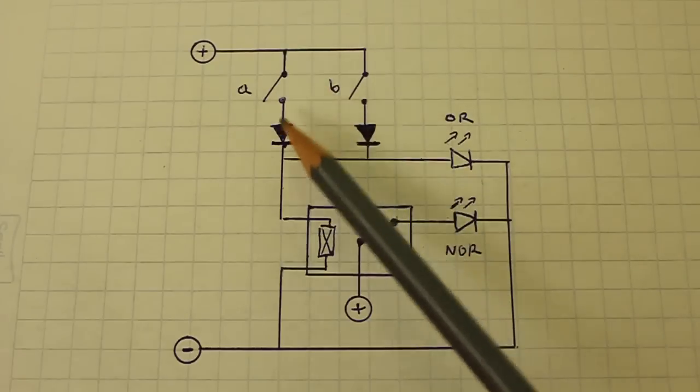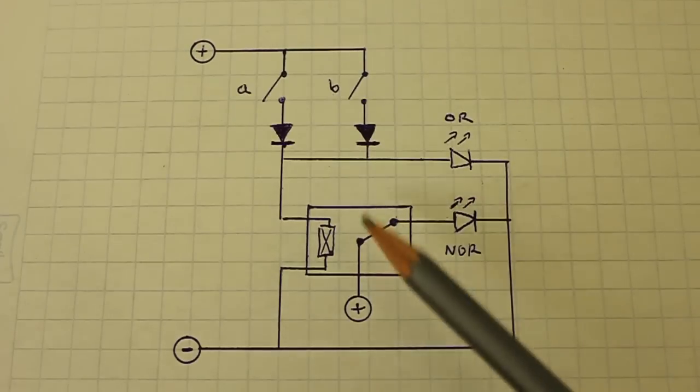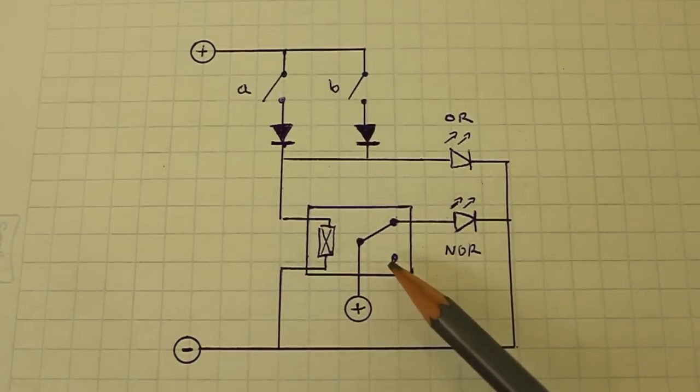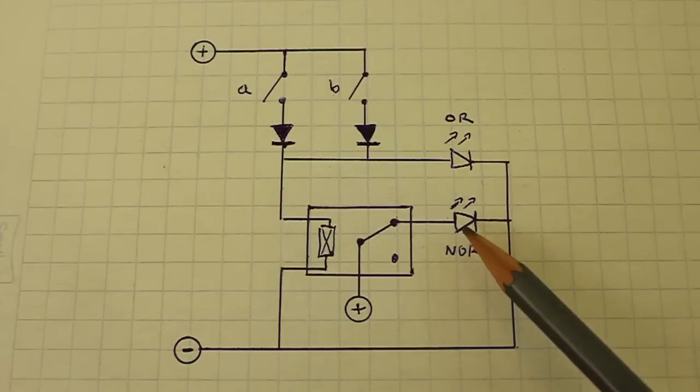And also, it will flow to the coil of the relay and this switch will move to the other position. The NOR LED will turn off.